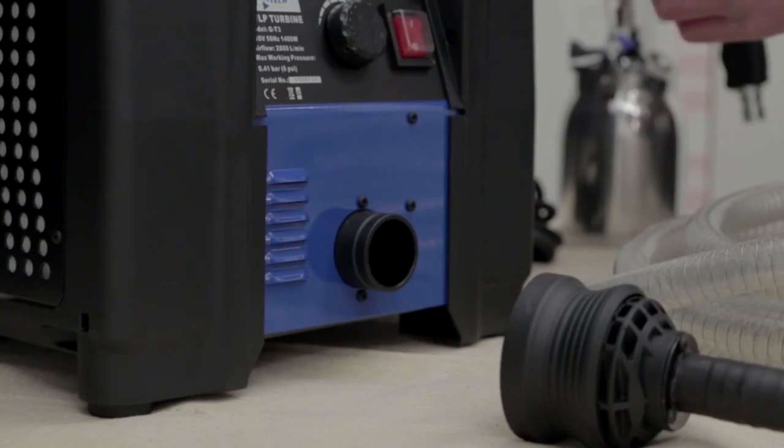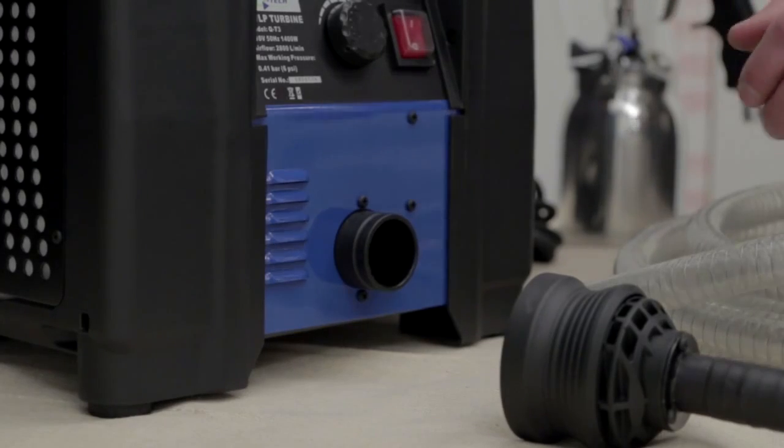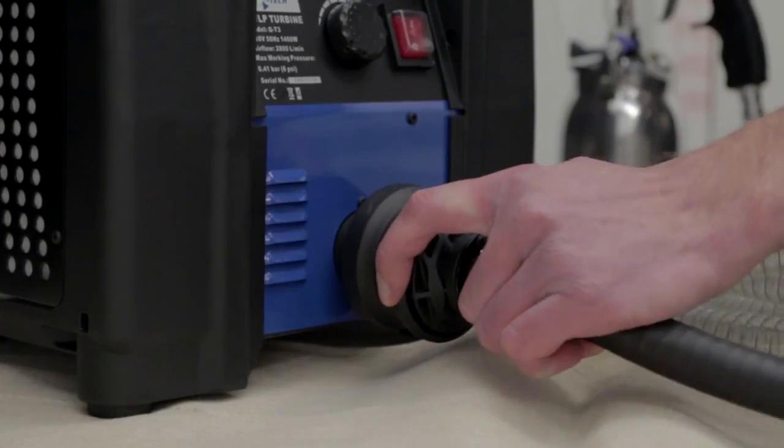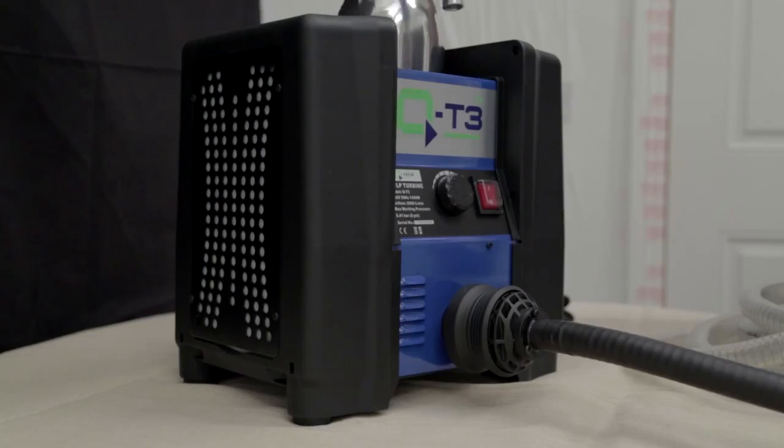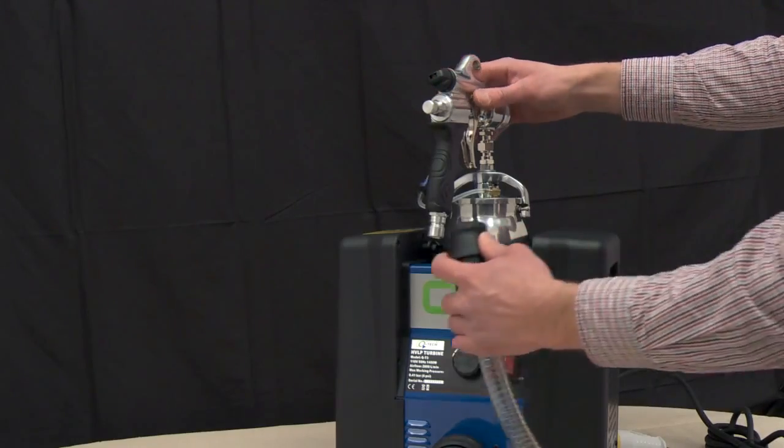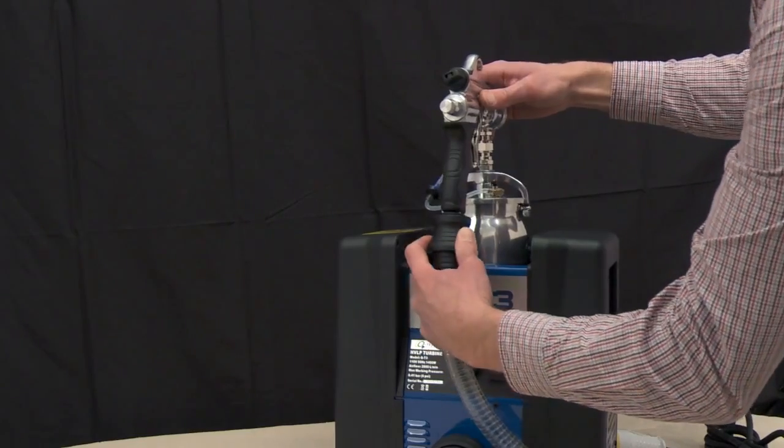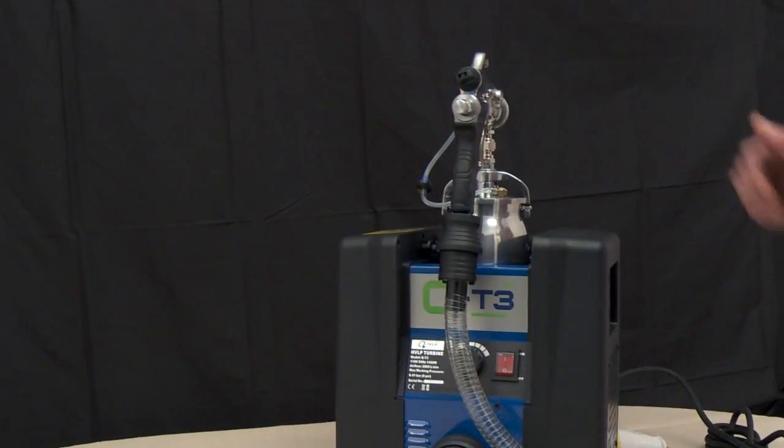The next step is to connect the hose on the QT3 turbine unit. This is a quick release fitting. The larger end of the hose connects to the QT3 turbine unit and the smaller end onto the spray gun. It is useful to use the well in the top of the unit to keep the gun in an upright position.